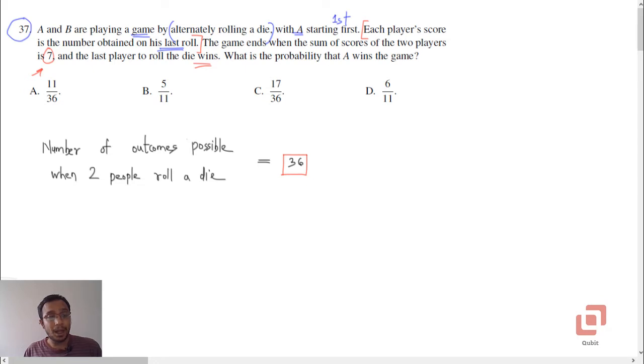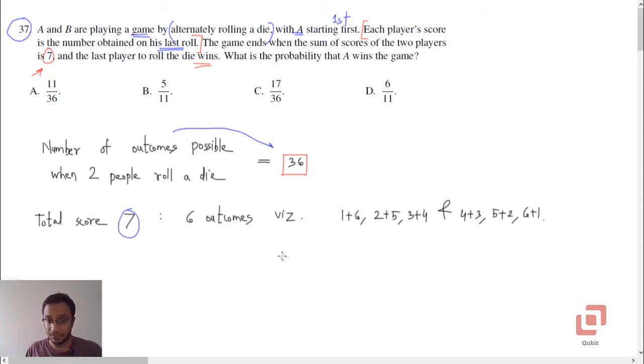Now, out of those 36 outcomes, how many outcomes have the addition 7? If you want the total score to be 7, then there are 6 such outcomes. Which 6? 1 plus 6, 6 plus 1, 2 plus 5, 5 plus 2, 3 plus 4, and 4 plus 3. So which means, out of 36, there are 6 outcomes which lead to a victory for that player and there are 30 other outcomes which give the next player a chance.